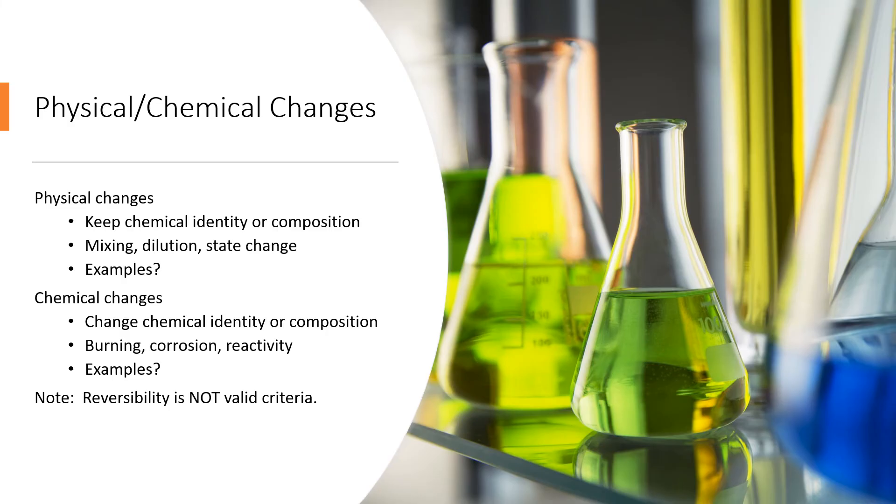So physical versus chemical changes are outlined here. When we do physical changes, we're going to keep the same chemical identity or composition. Mixing, dilution, and changing state are the most common examples of physical changes we'll see in chemistry. And when I'm talking about state changes, I'm talking about things like melting, where a solid changes into a liquid. And chemical changes are ones where the chemical identity or composition is changed. That'll be things like burning, corrosion, reactivity.